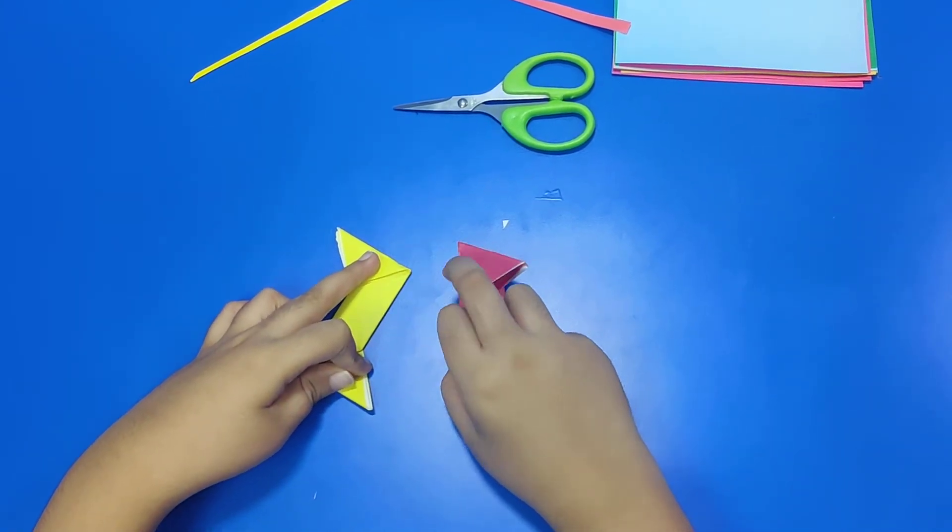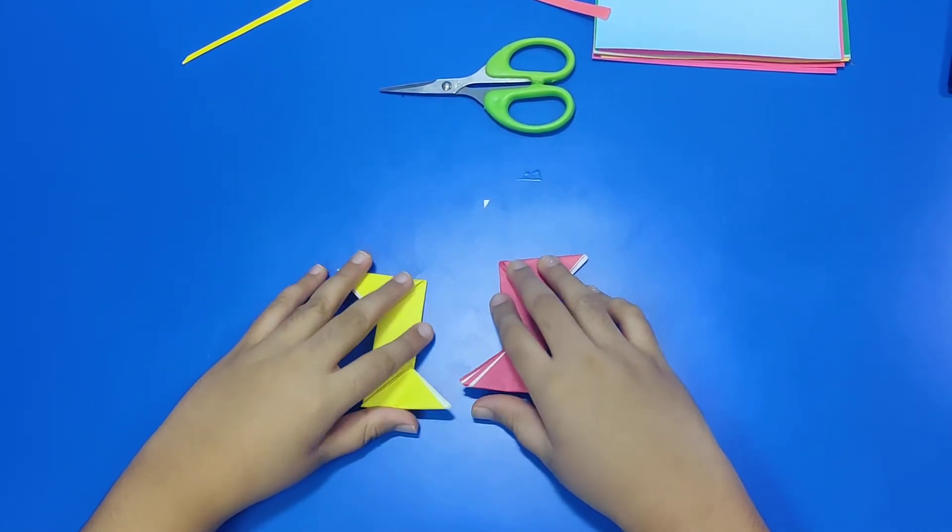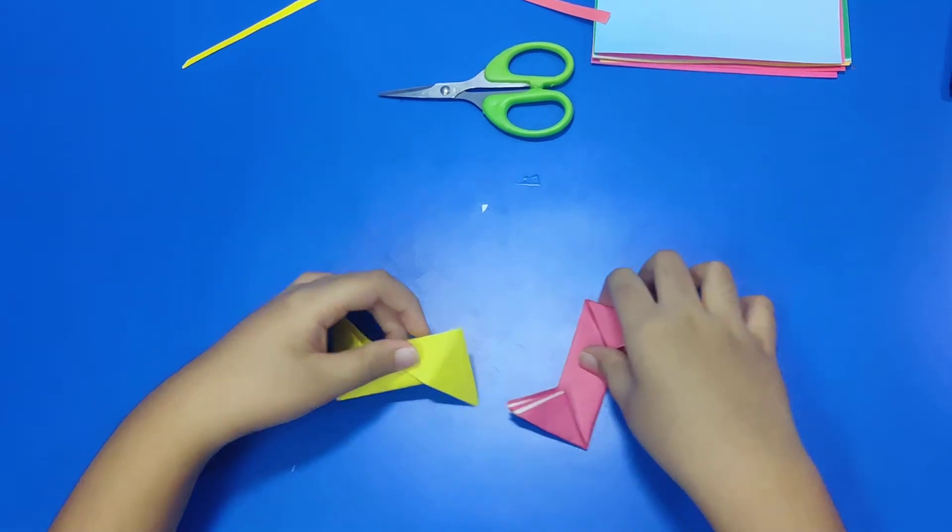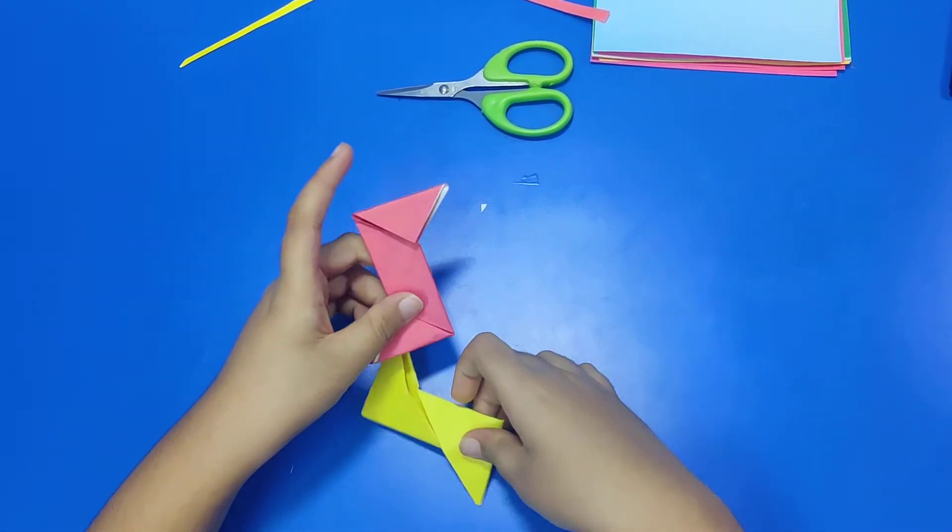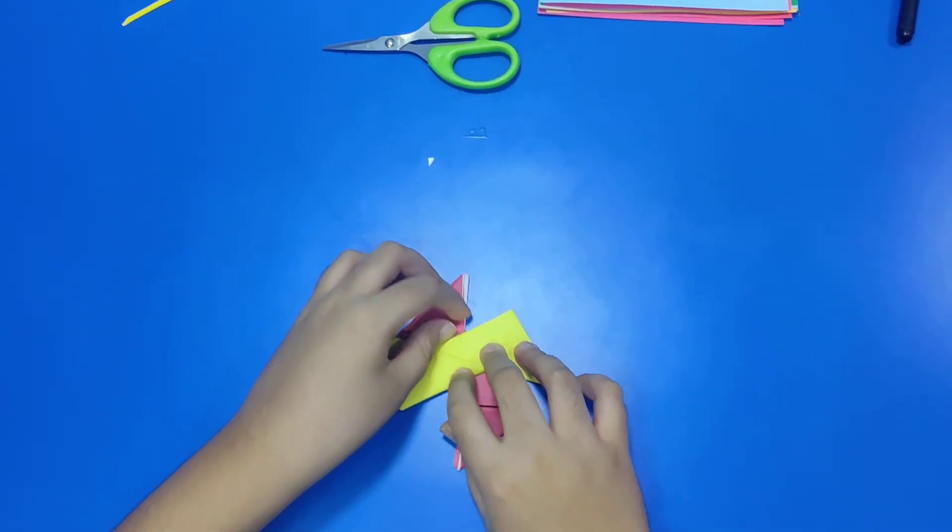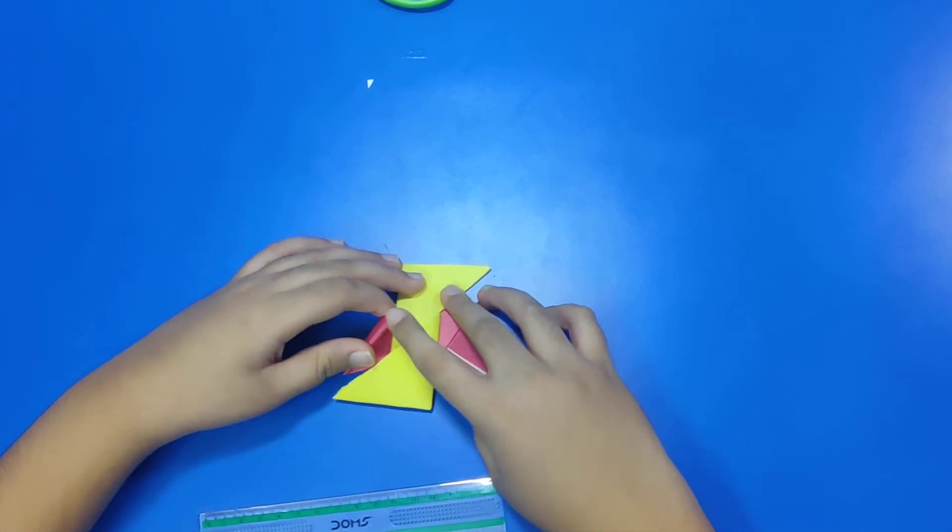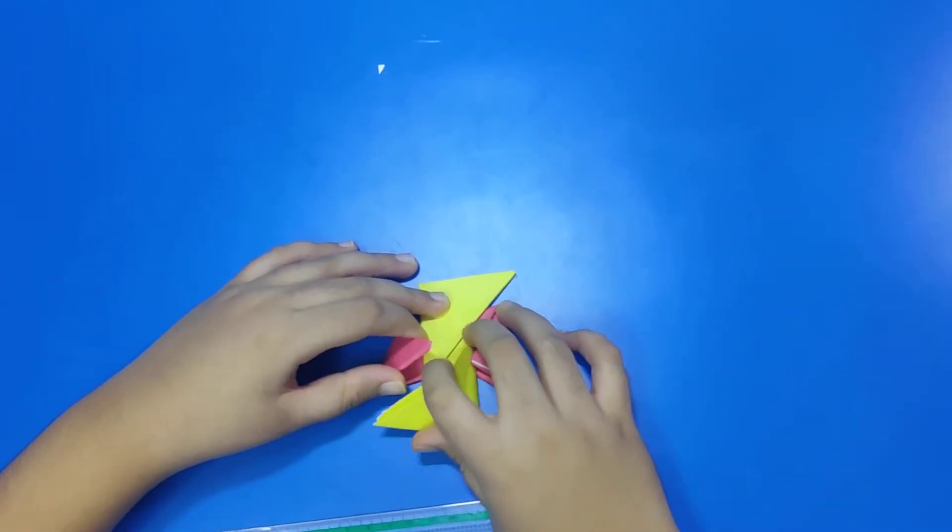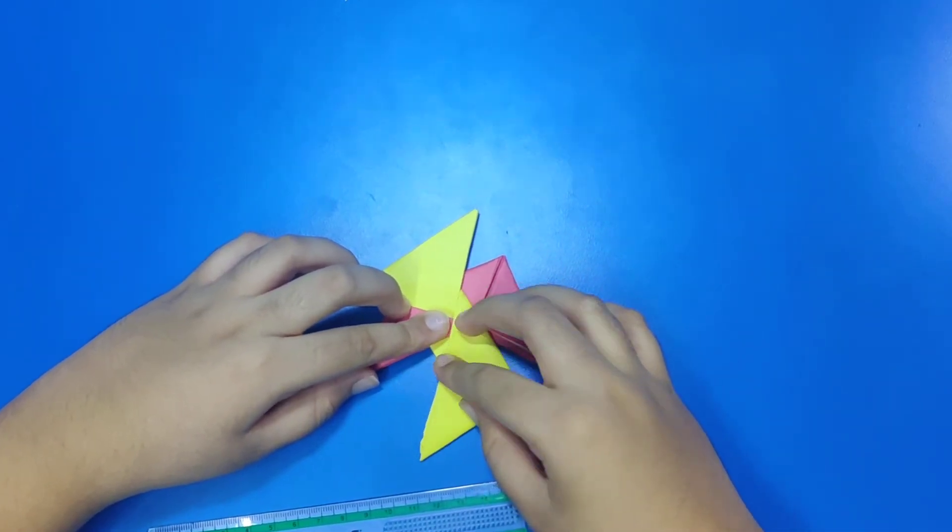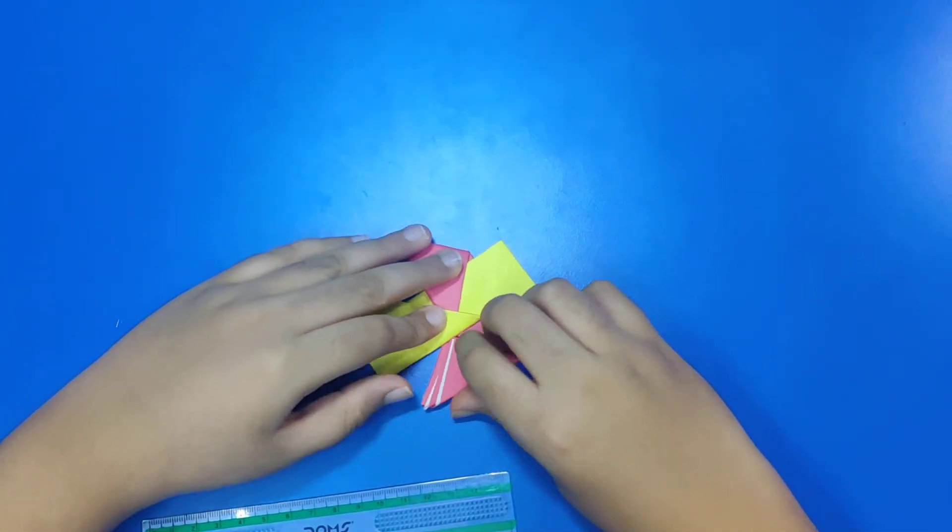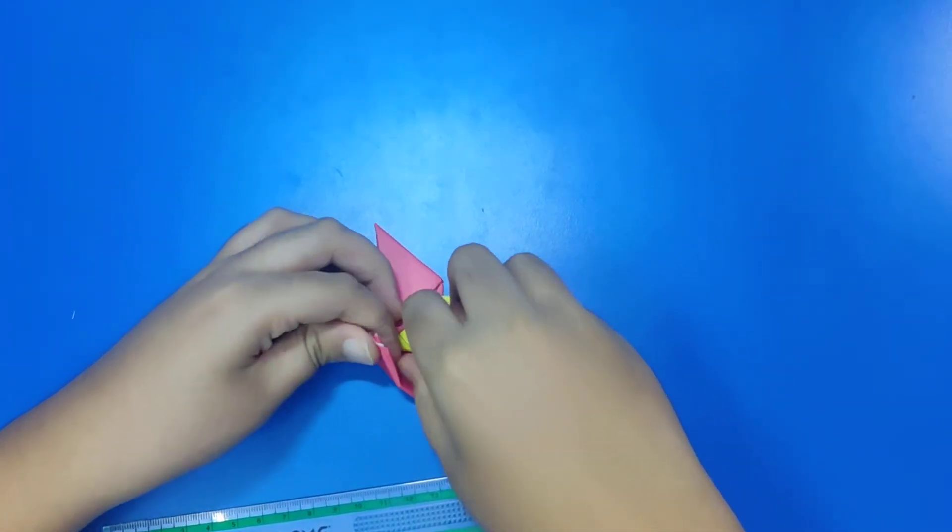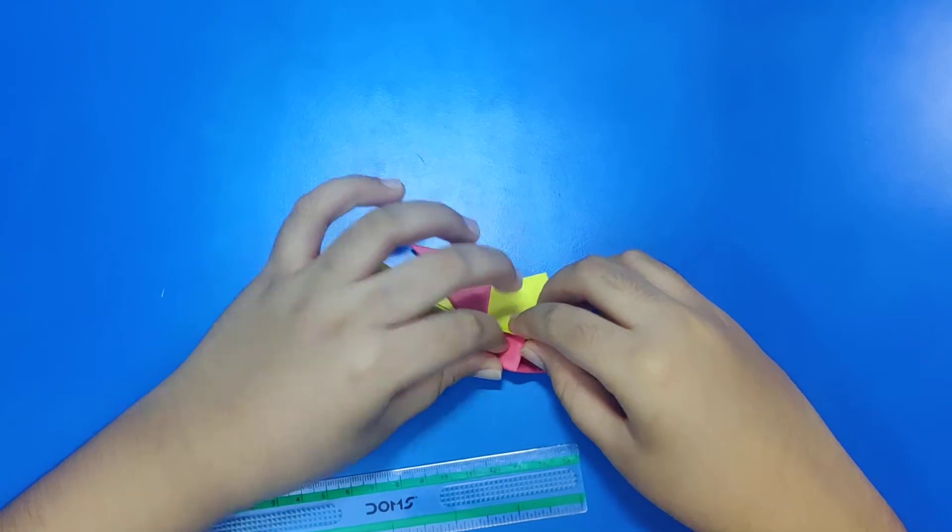Now, open it. And now, keep one like this. This should be down. Keep one like this. Here. And now, put this inside this thing. Like this. And then, same here. Like this. So, inside this.